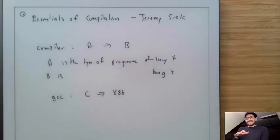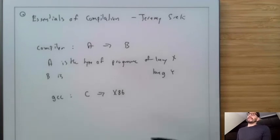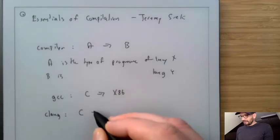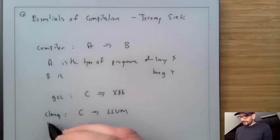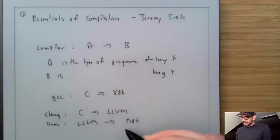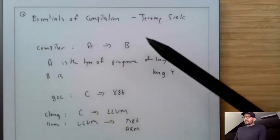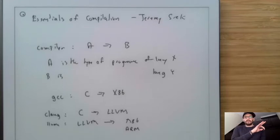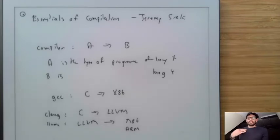For example, GCC takes programs written in the C programming language and returns programs written in X86. Behind the scenes, GCC produces an intermediate representation that can be turned into many different things. Another example is clang — a compiler that takes a C program and produces LLVM. Then LLVM takes that LLVM program and can produce an X86 version, an ARM version, and has a whole bunch of different backends. So at a basic level, a compiler is just a function that converts one data type to another.